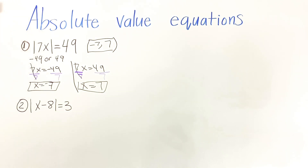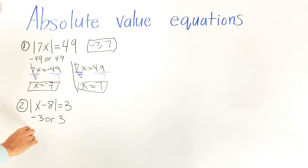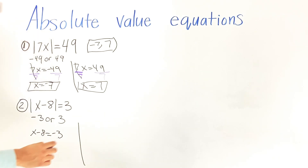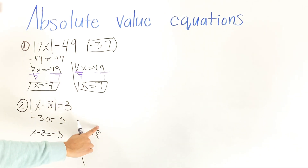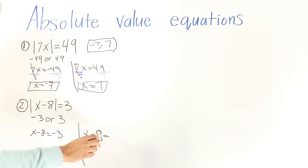Now for number two, we do the same thing. The answer is going to be negative 3 or positive 3. We write two equations: x minus 8 equals negative 3, and x minus 8 equals positive 3.